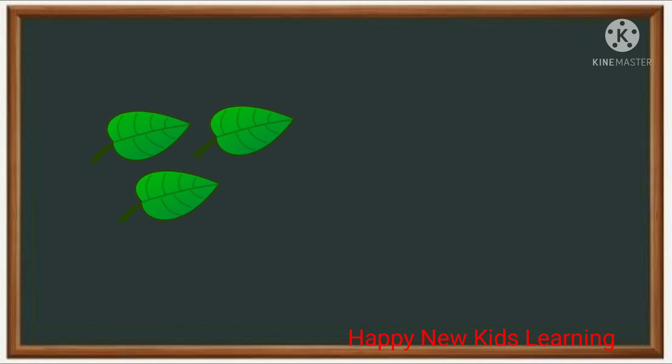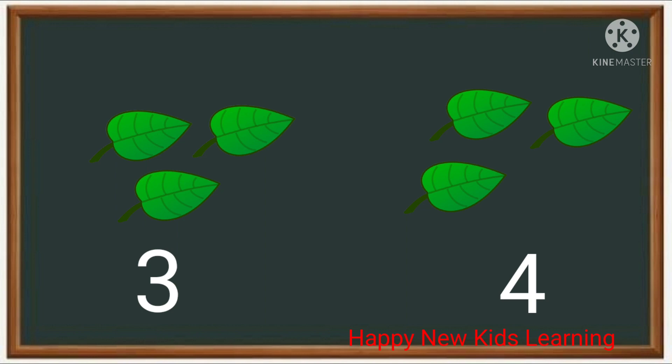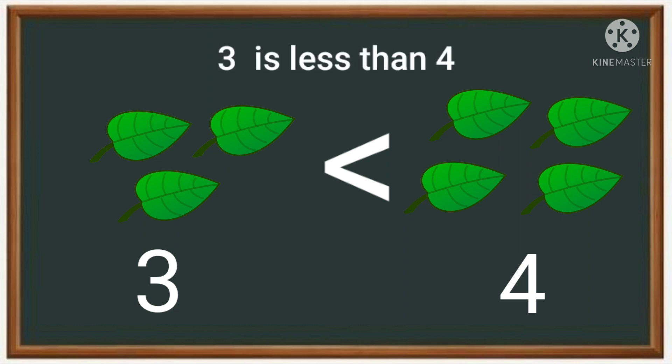Now we have three leaves and four leaves. Three is less than four. So the back of my mouth will point towards three and I will open my mouth to eat the big number four, which is bigger than three. Three is less than four.